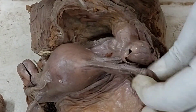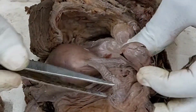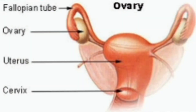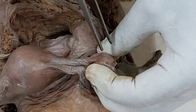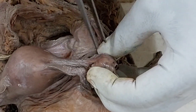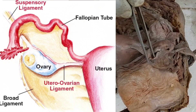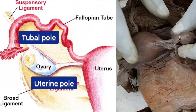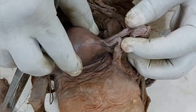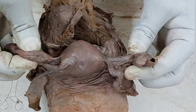Among the two poles, the upper pole is related to the uterine tube, so it is called the tubal pole. The lower pole is attached to the uterus by the ligament of the ovary, so it is called the uterine pole. So the tubal pole is above and the uterine pole is below. The ovary is more or less vertically placed or to some extent obliquely oriented.